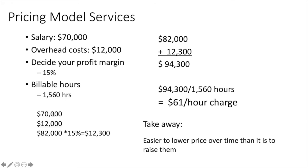Take the $70,000 desired salary and the $12,000 overhead costs — that's $82,000. Always put your costs in there. Multiply by a 15% profit margin, which gives another $12,300. Add those together and we get $94,000, then divide that by your billable hours.